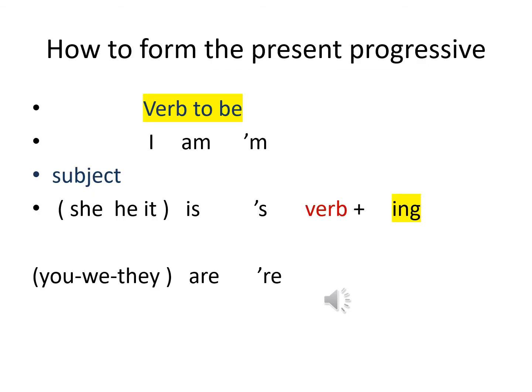How to form the present progressive: we use the subject plus verb to be. Do you remember verb to be? Verb to be: am, is, and are. I am; he, she, it is; you, we, they are. So we use: verb to be + the verb + ING.